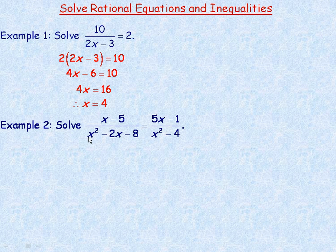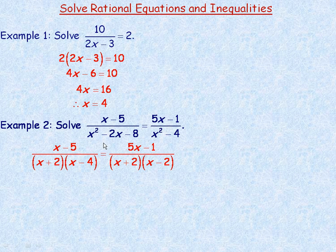In example 2, there are two different denominator expressions. While they won't always factor, you should always try — it will make your equation simpler. Factoring the left denominator, x squared minus 2x minus 8: look for numbers that add to negative 2 and multiply to negative 8, which are positive 2 and negative 4. So it factors into x plus 2 and x minus 4.